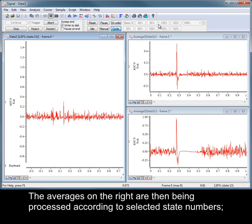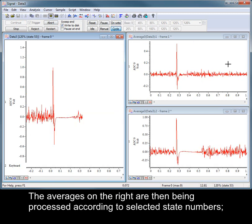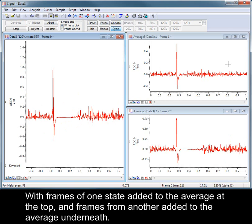The averages on the right are then being processed according to selected state numbers, with frames of one state added to the average at the top and frames from another added to the average underneath.